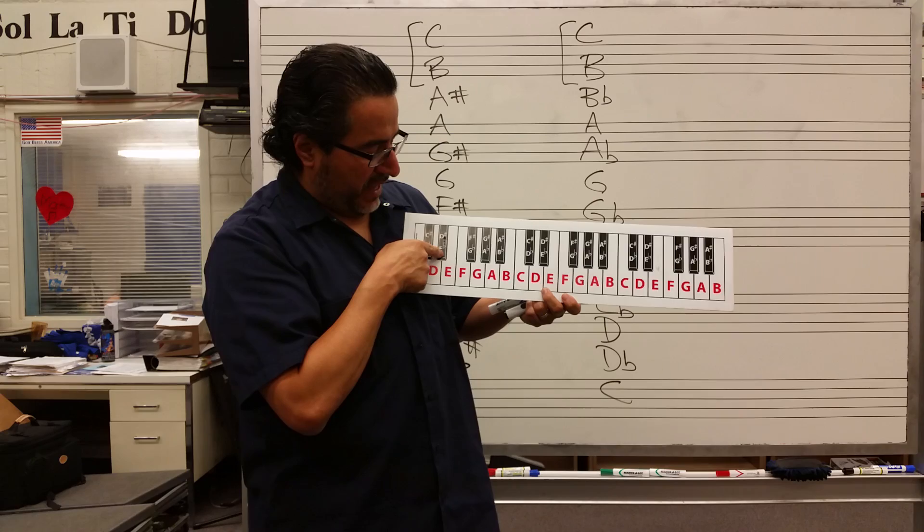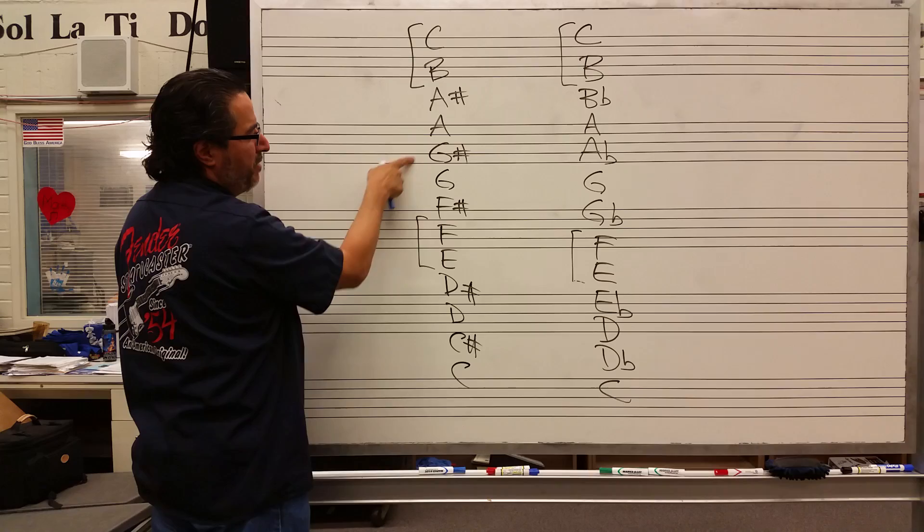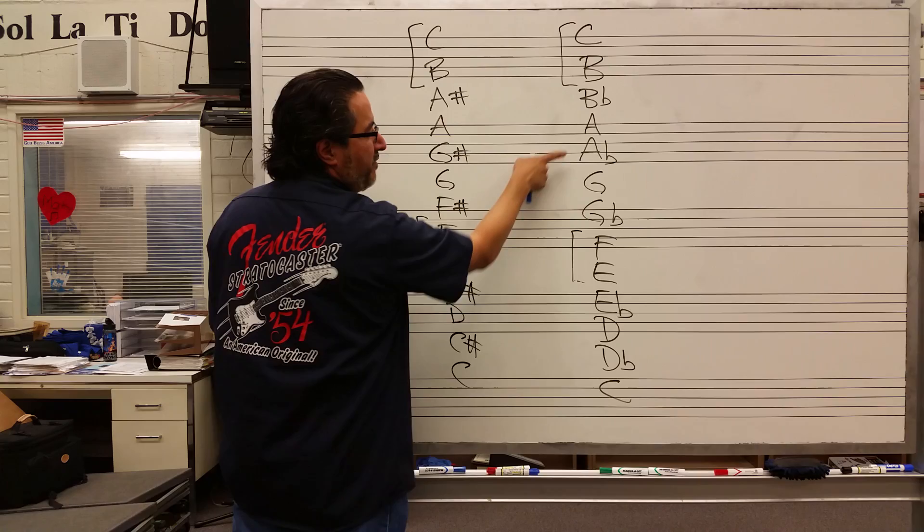From E up to F-sharp would be a whole step. It's a different shape on the piano under your hand. And then from E-flat up to F would be a whole step. So two half steps make a whole step.